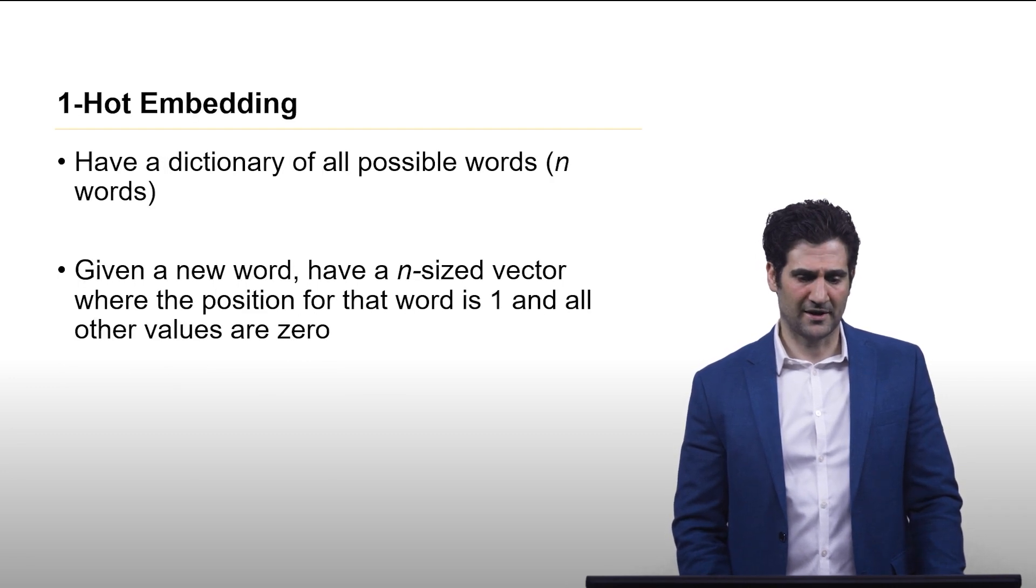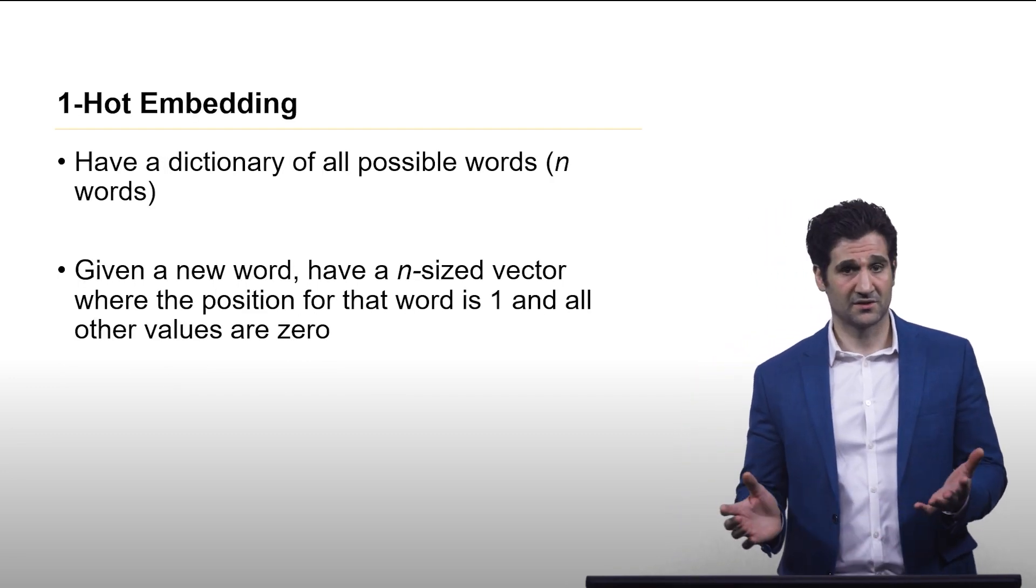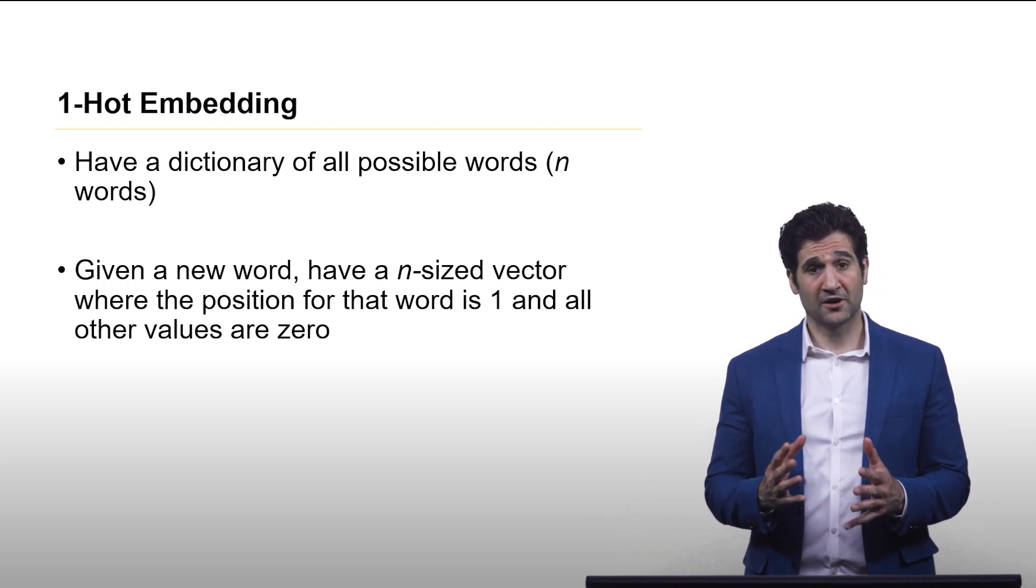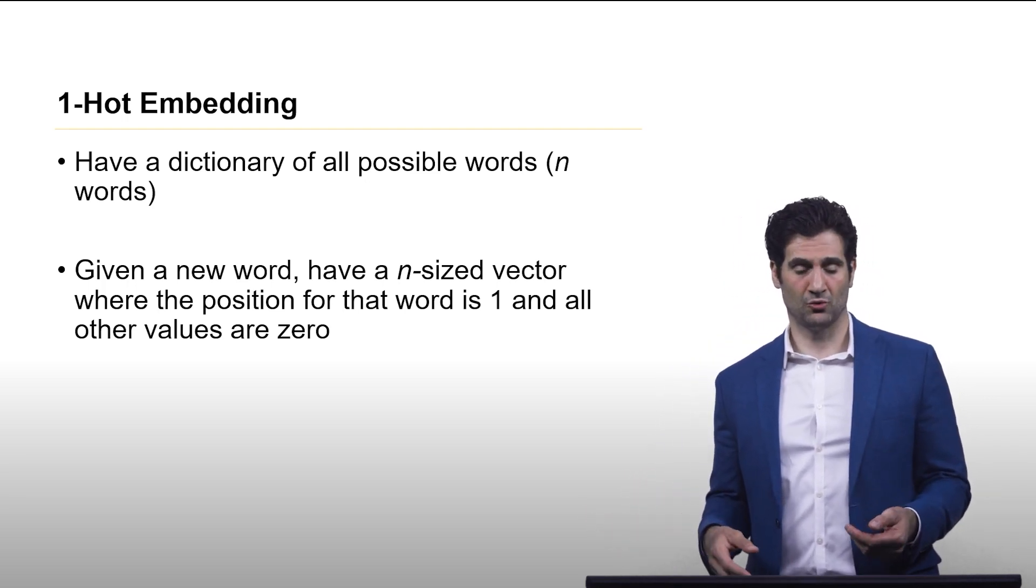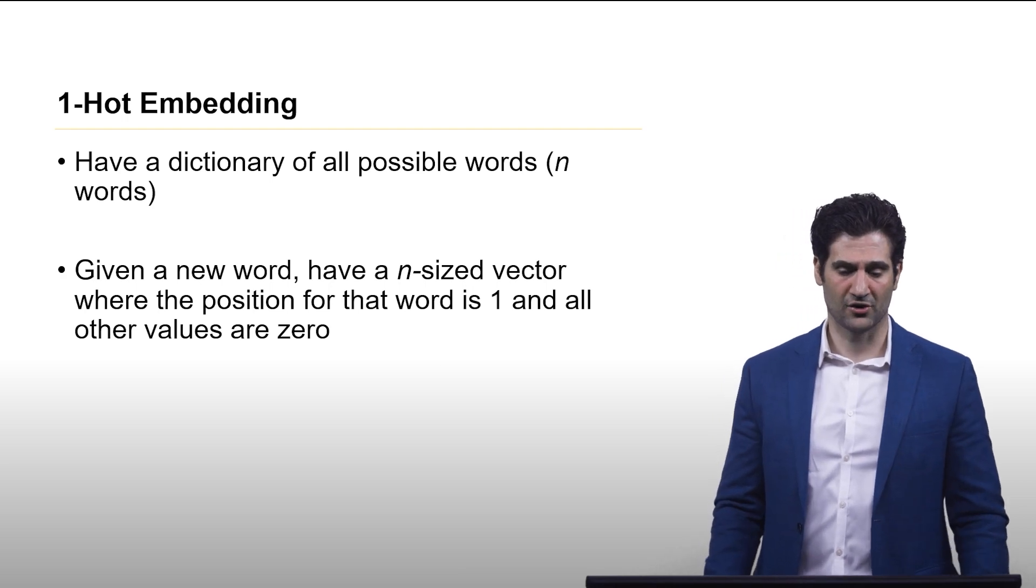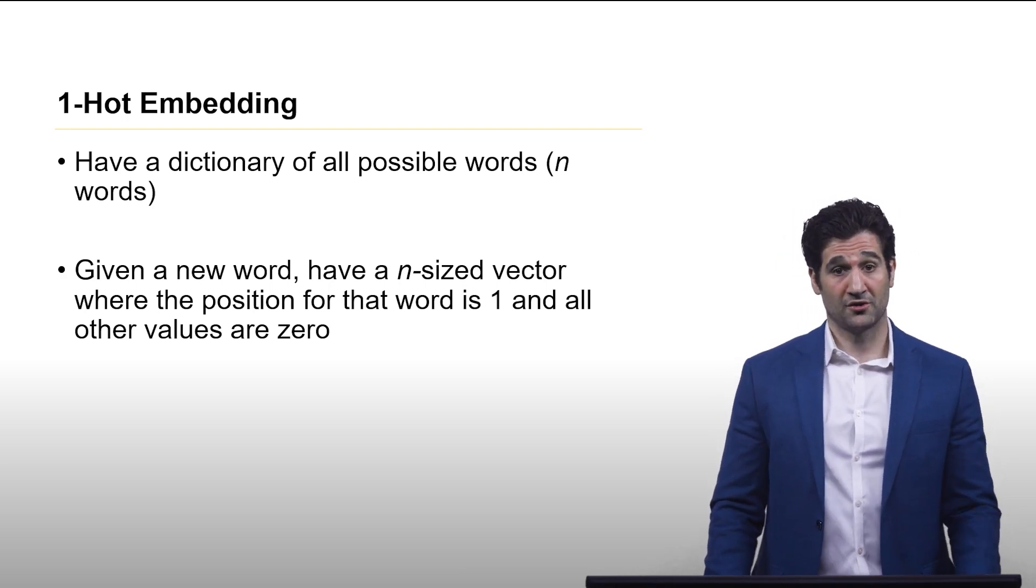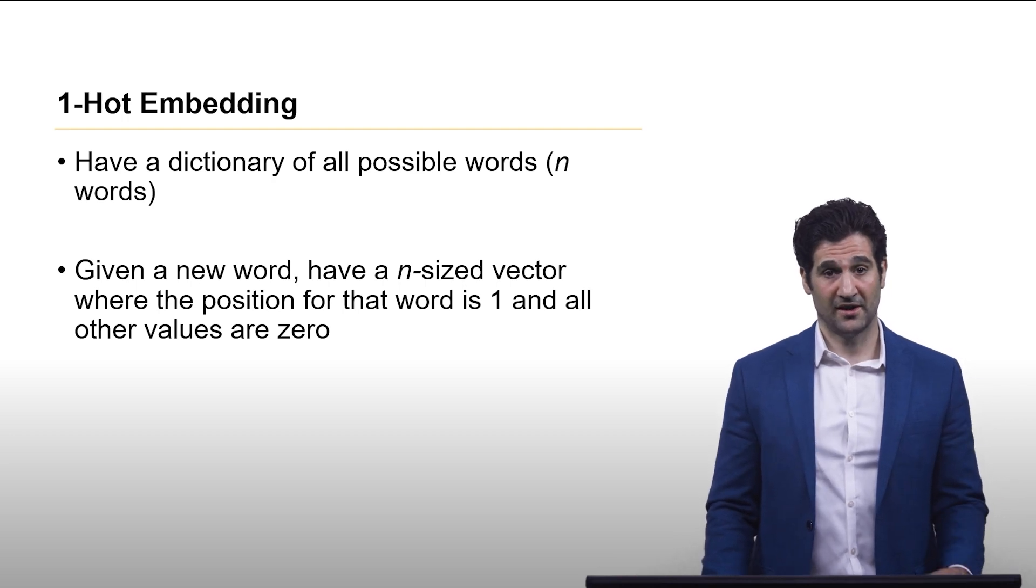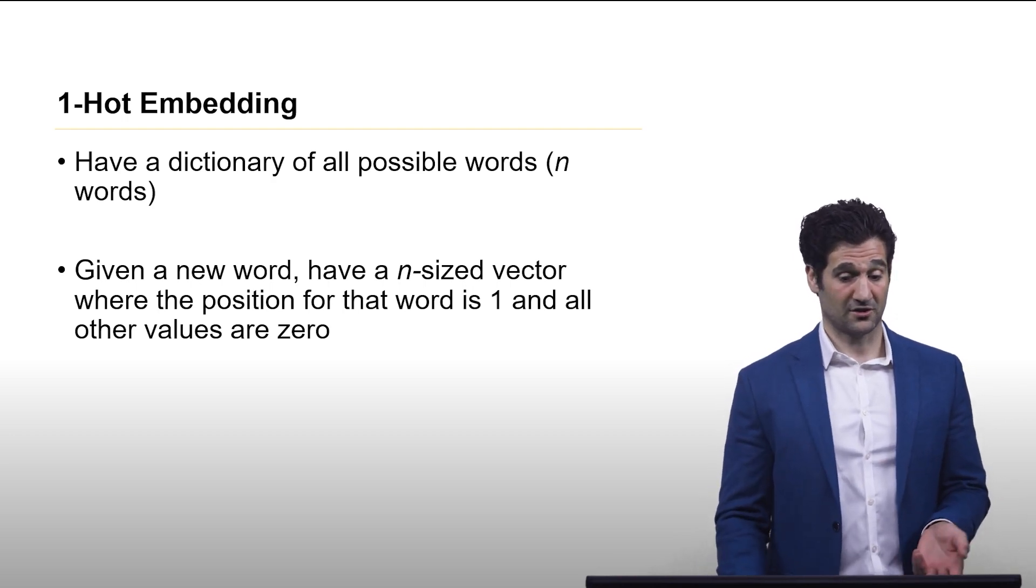So let's talk about that. One technique that's widely popular is what's called a one-hot embedding. Here you have a dictionary of all possible words—we'll just say n words. And for each word, you have an n-sized vector where the position of that word is one and all the others are zero.